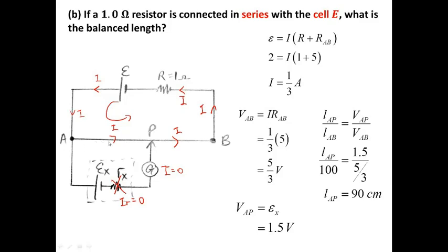And then VAP — we also need VAP. VAP is equal to EX. Why? Because there's no potential drop across the internal resistance — no current, so IR equals zero. So VAP is only equal to EX, which is 1.5V. Using the ratio formula as usual and putting in VAP equals 1.5 and VAB equals 5/3, we can get the balance length.